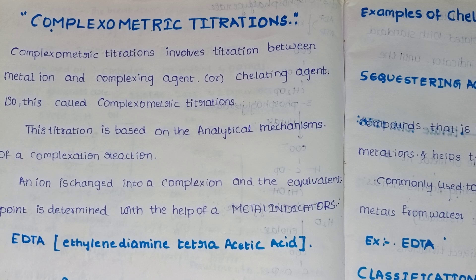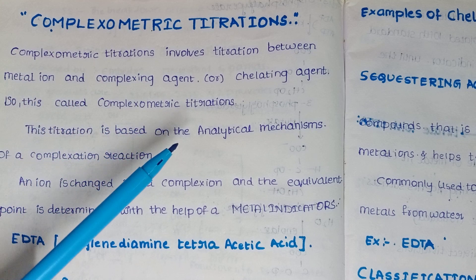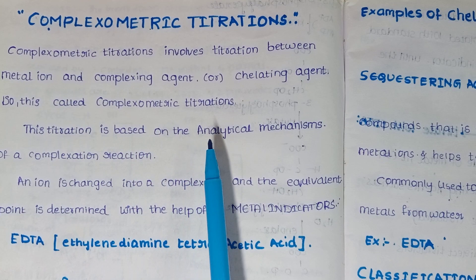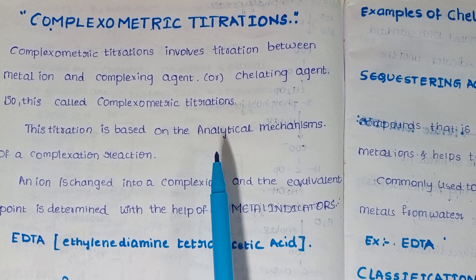What is complexometric titration? In simple terms, simple means which can be determined easily, but complex means it is time-taking. Complexometric titrations involves titration between a metal ion and a complexing agent or chelating agent. We will identify the main titrations using the complexing agent or chelating agent.